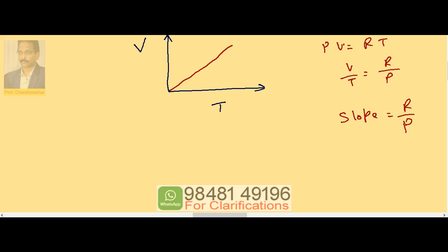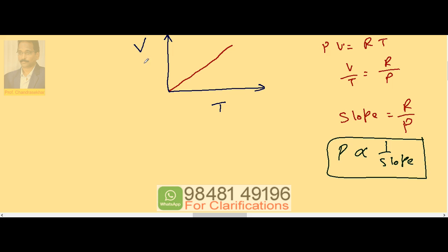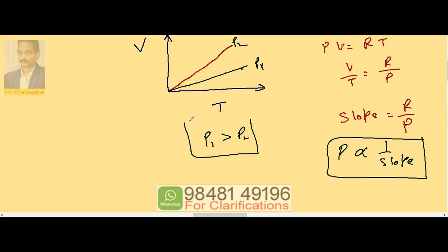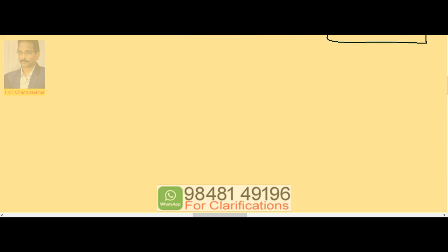Since R is constant, pressure is inversely proportional to slope. The slope of the V-T graph gives the inverse of pressure. Considering two graphs, if this is P₁ and this is P₂, where slope is less, pressure is more. So P₁ is greater than P₂.